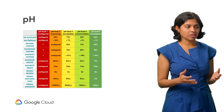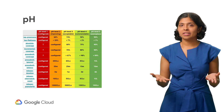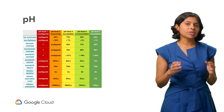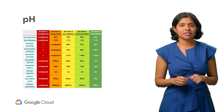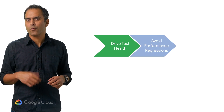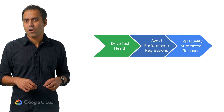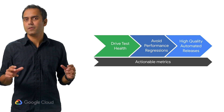We started pushing the boundaries of both developer velocity and quality. We balance developer velocity and quality at Google and on GCP through Project Health (PH). We track key metrics across developer productivity, release velocity, reliability, and most importantly, quality. We automatically calculate a PH level and aim to achieve a PH level of 5 for all projects. Our guiding principles are driving test health, avoiding performance regressions, and high quality automated releases, all of which are anchored in actionable metrics.